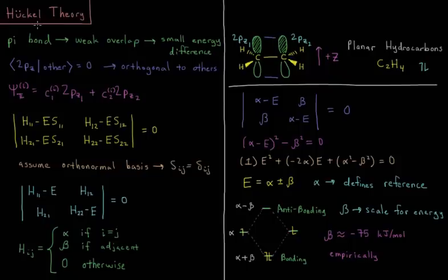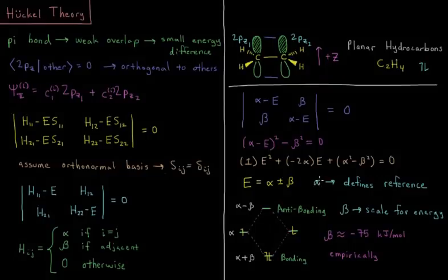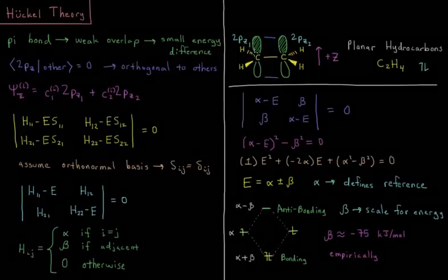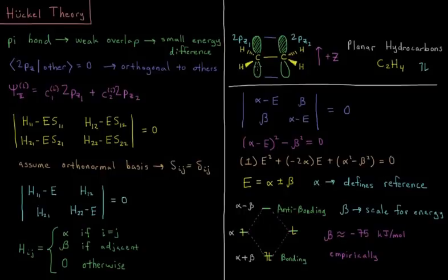These values, alpha and beta, in Huckel theory, alpha is going to define the reference or kind of the zero in energy of our system. Alpha is just going to be whatever the energy of a pz orbital non-interacting with other atoms is going to be. So it's kind of our zero starting point in energy. And then beta is the scale for the interaction, the scale for the coupling. If beta gets bigger, the coupling is stronger. If beta gets smaller, the coupling is weaker.